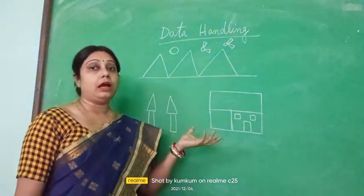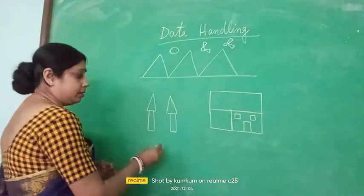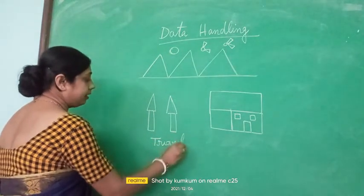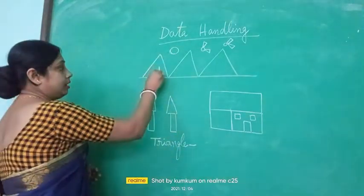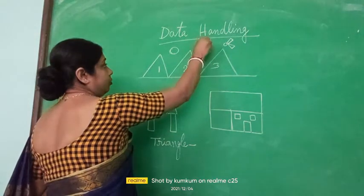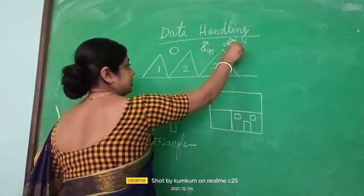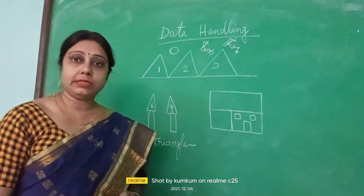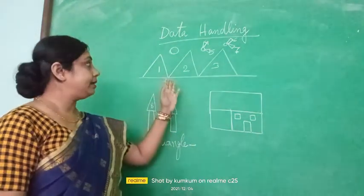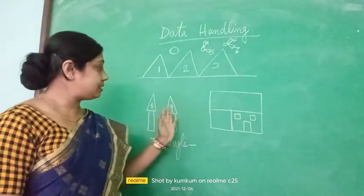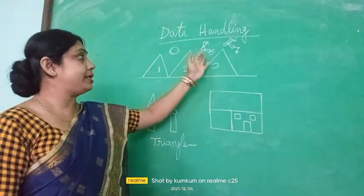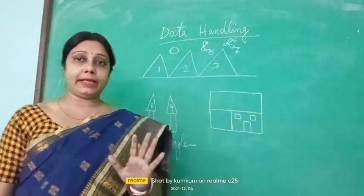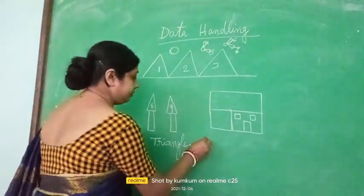How many shapes are used and in how many numbers? First, we are using triangle. Now see how many triangles are there: one, two, three, four, five, six, seven, eight and nine. In this picture, the mountains look like triangles, the tree tops look like triangles, and the birds' wings look like triangles. So we have gathered the information that there are nine triangles in the picture. We will write here nine.